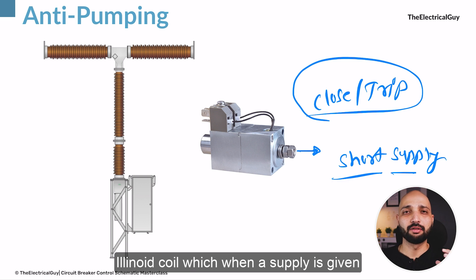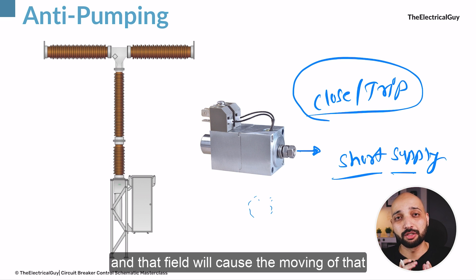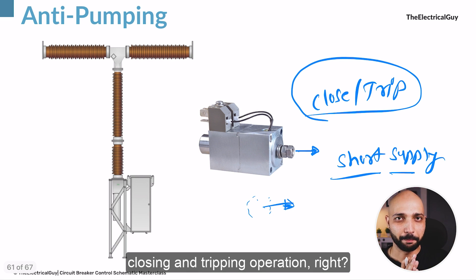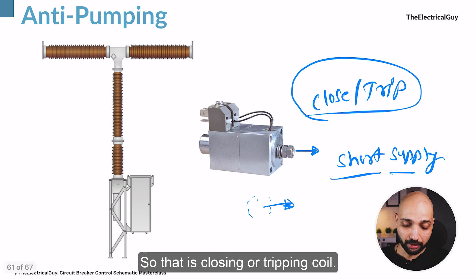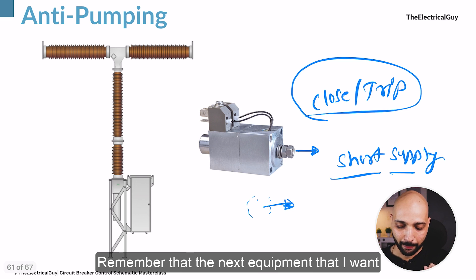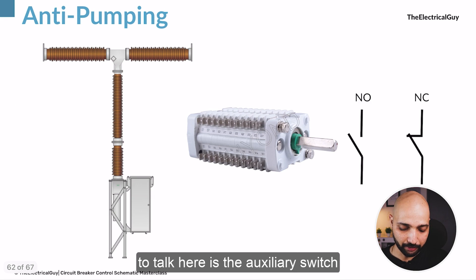You have to make sure you are giving only a short supply to this coil. It is a solenoid coil — when a supply is given, the winding generates a field, and that field causes the movement of the piston, which initiates the closing or tripping operation. That is the closing or tripping coil.